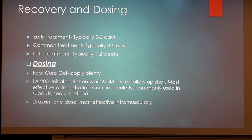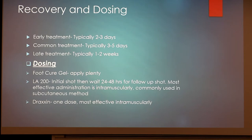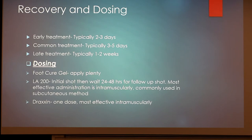For recovery and dosing: if you catch it early with the gel, you can typically get rid of it in two to three days — the ideal situation. For common treatment with Draxin or LA-200, from past experience it'll typically be gone in three to five days, though I've seen it gone in two days and in a week. For late treatment after amputation, that's going to take one to two weeks before the animal is even feeling healthy enough to get up and moving. In a commercial operation, late-stage treatment usually won't happen — that animal will be put down because it becomes more of a problem than it's worth.